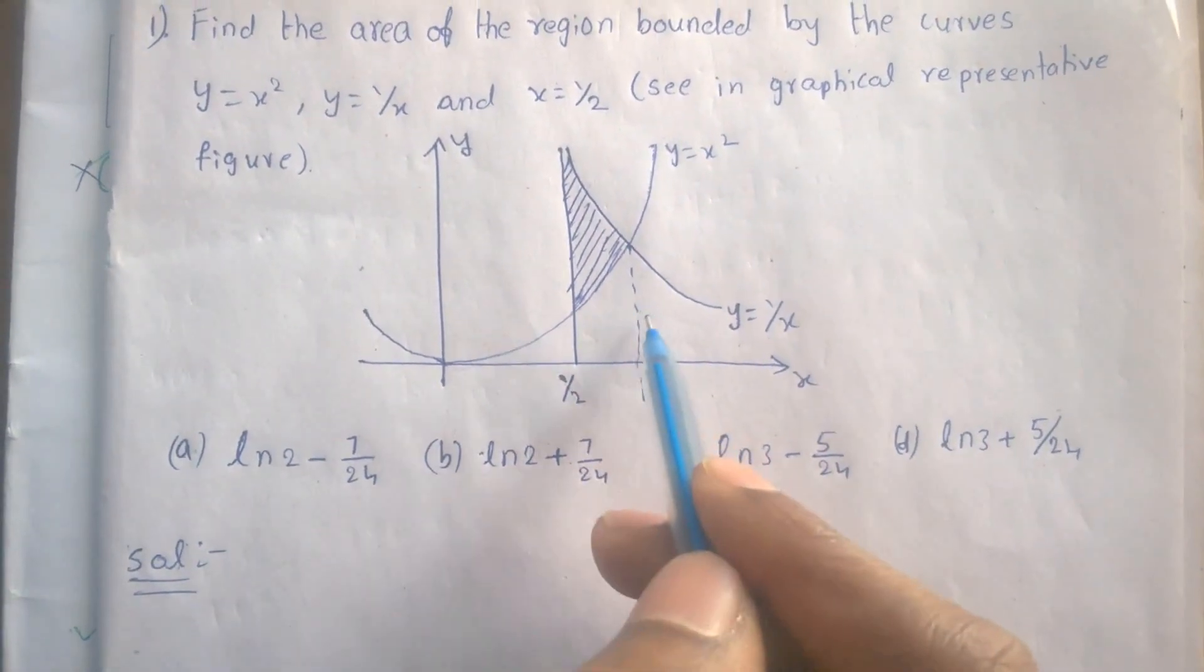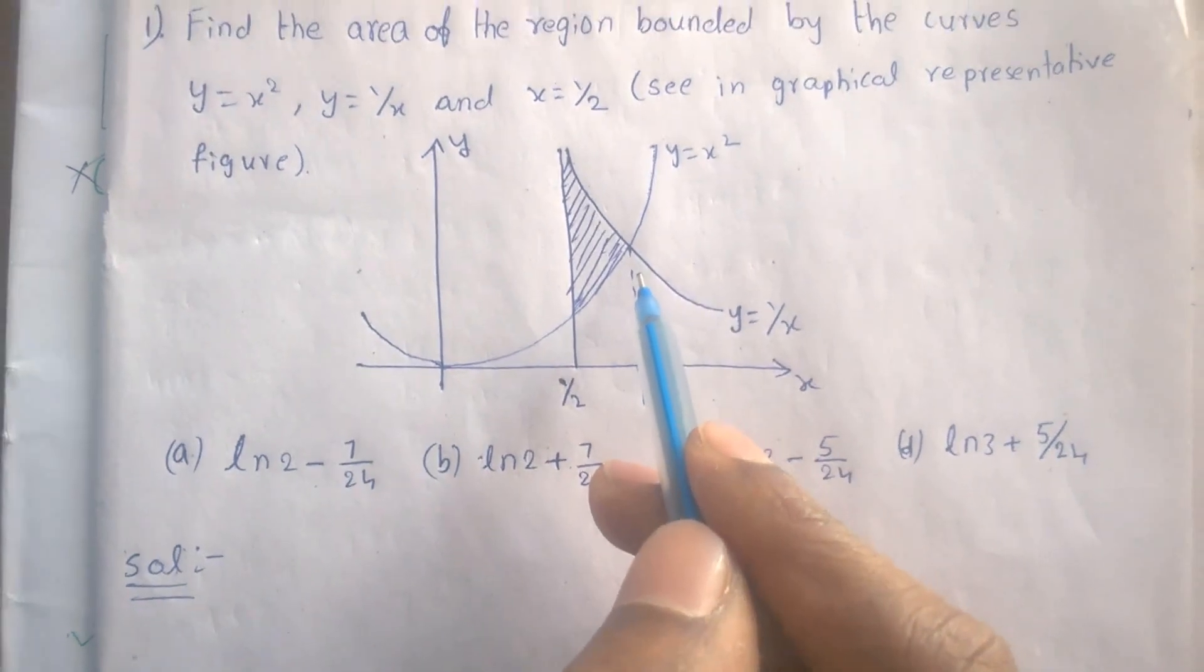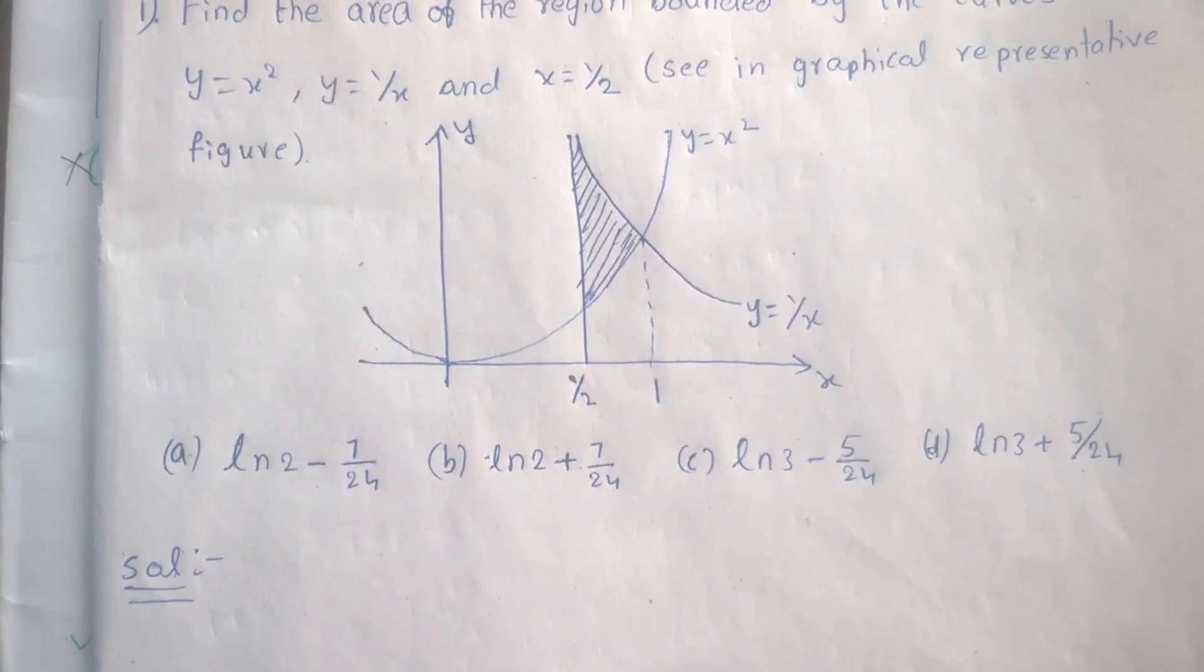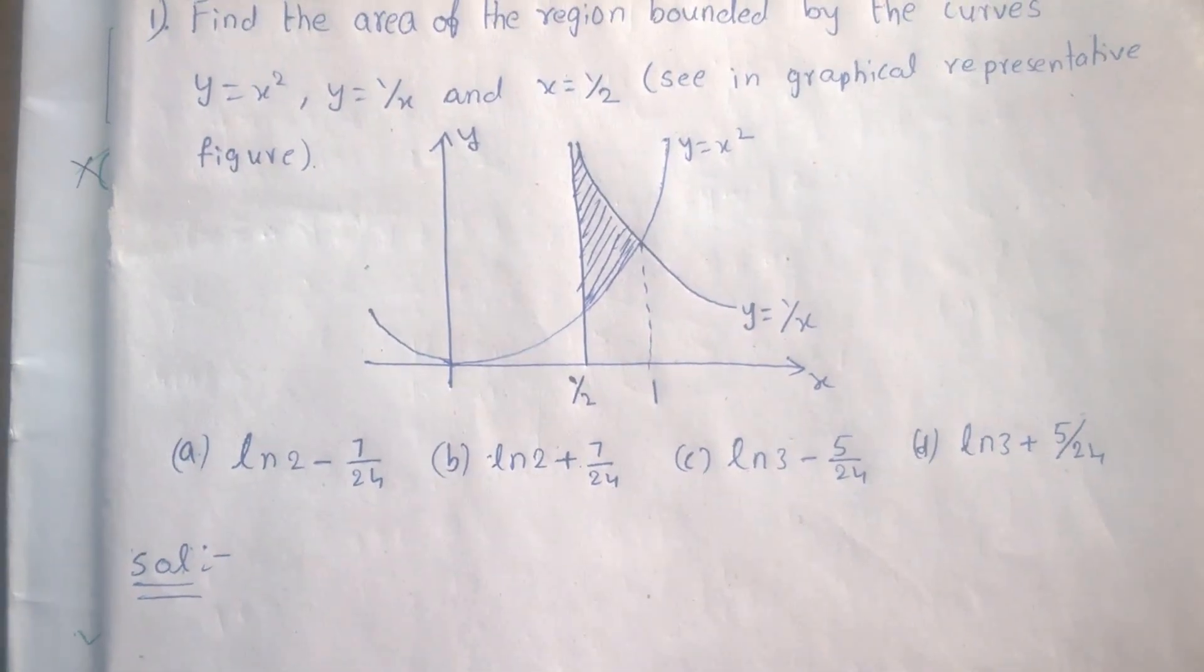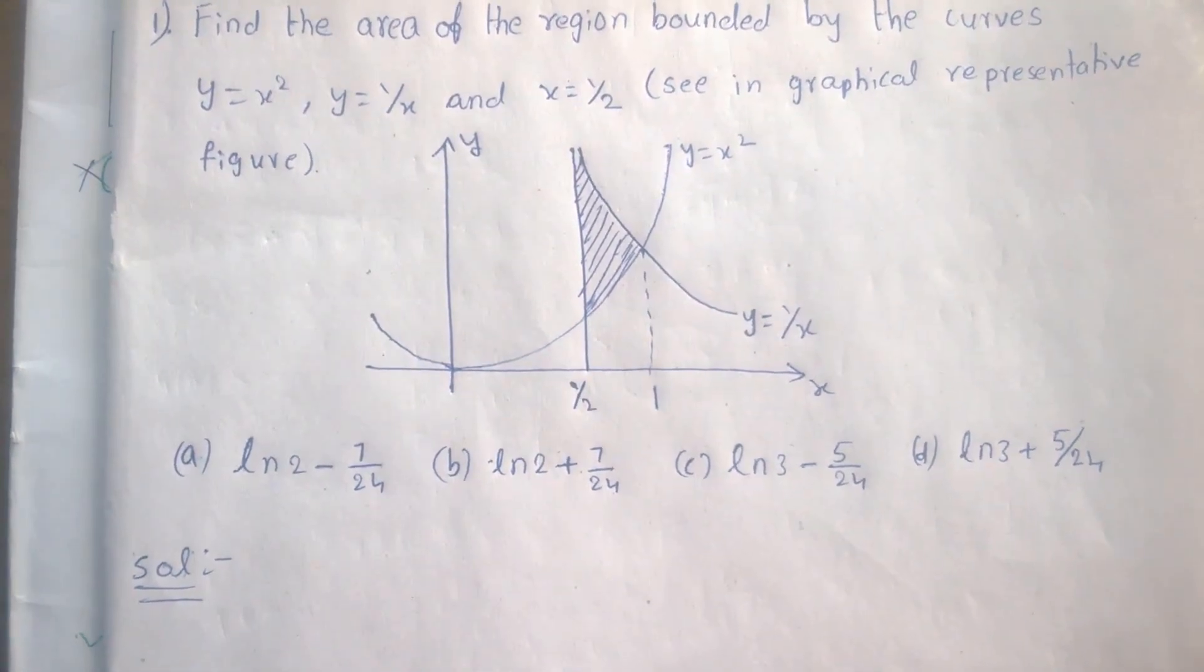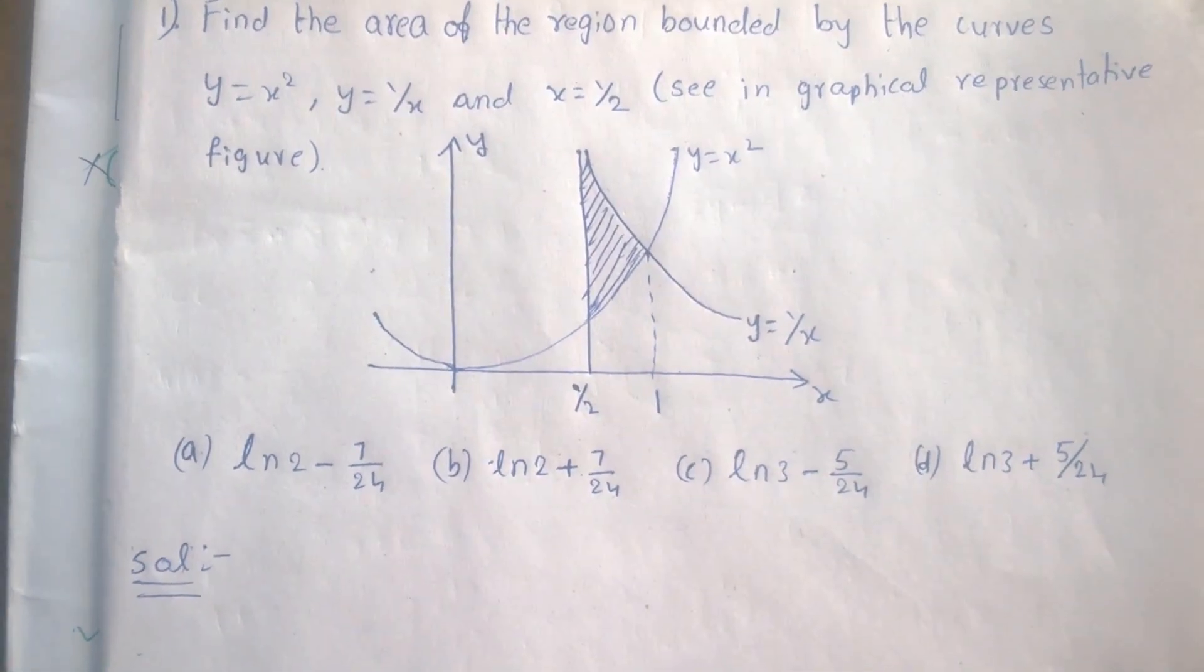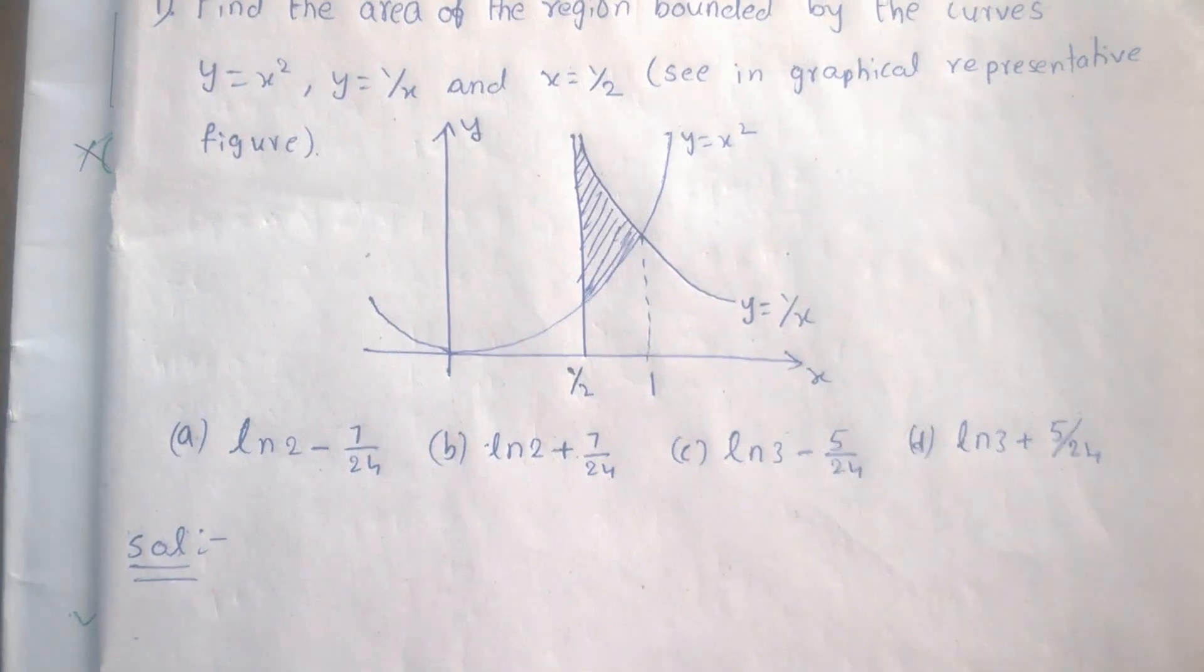These two curves intersect at the point where x equals 1. We are given with options here: log 2 minus 7 by 24, log 2 plus 7 by 24, log 3 minus 5 by 24, and log 3 plus 5 by 24.